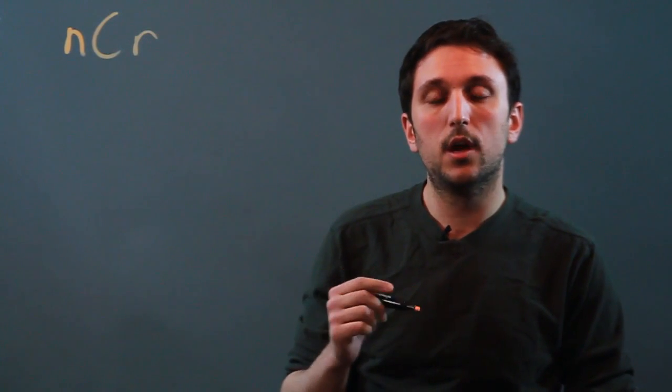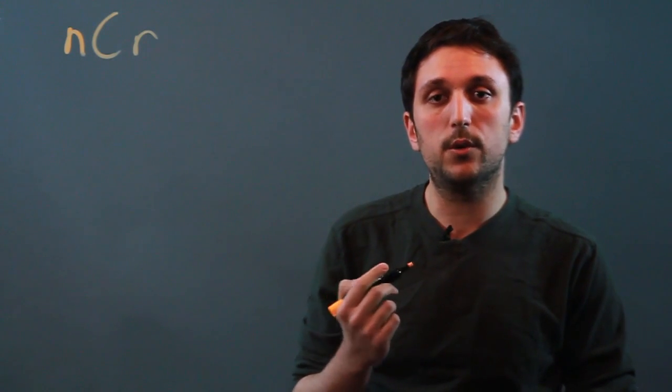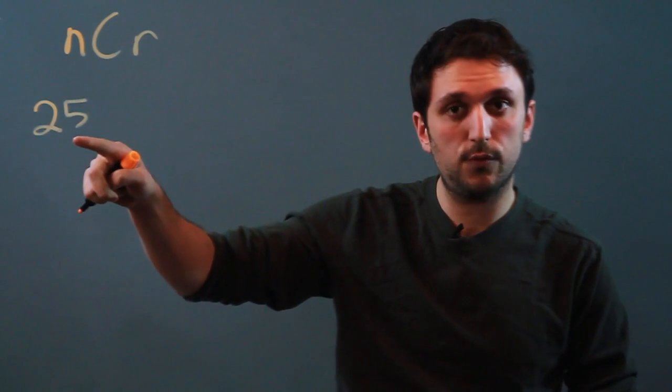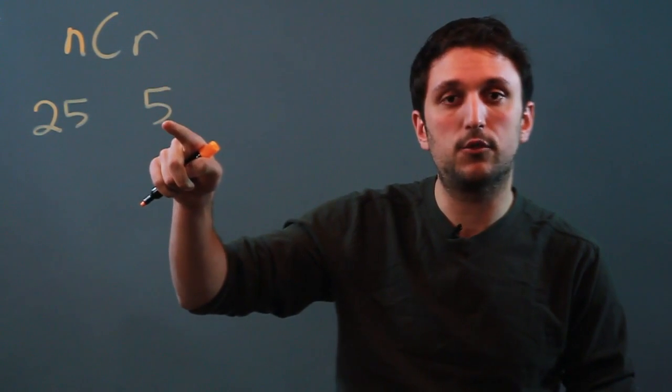And if you have a graphing calculator, you're going to need to hit a few more buttons. But basically, what we want to do is say, okay, we have 25 things to choose from, and we have five things that must be chosen.